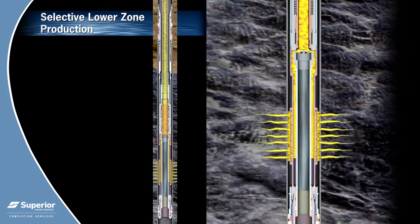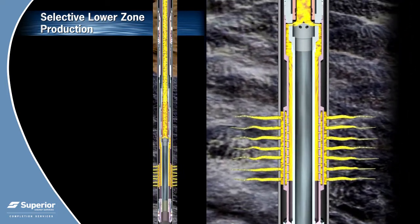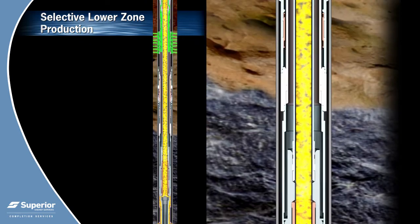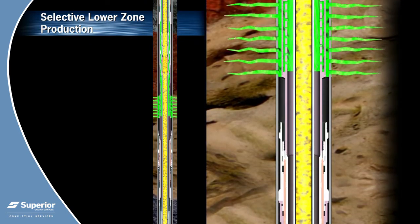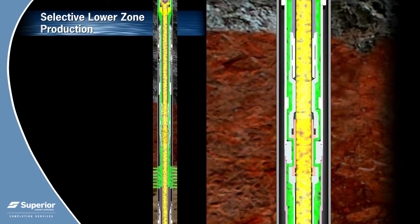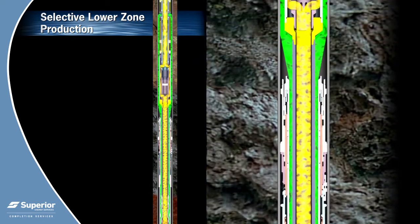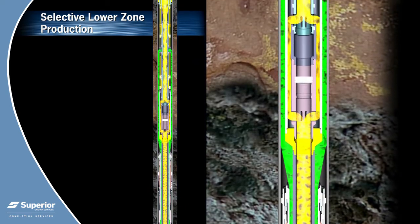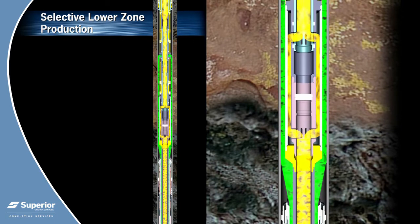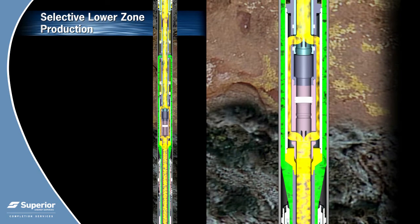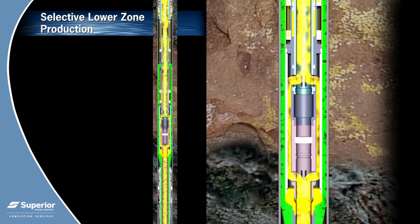The production flow path begins by flowing through the lower production screen, around the lower isolation tubing, through the radial flow valve, through the internal production isolation string, and into the pressure containing shroud surrounding the lower hydraulic multi-service valve. Fluid is prevented from flowing directly up through the production tubing by a plug placed in a nipple just below the lower hydraulic multi-service valve.